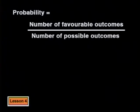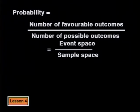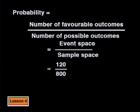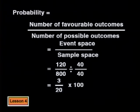Now let's calculate a probability using the Venn diagram. Suppose the school allows learners to do both music and art. What's the probability that the first learner I talk to does both art and music? We use the probability ratio: the number of favorable outcomes out of the total number of possible outcomes — in Venn diagram terms, that's the event space out of the sample space. The event space, those doing both art and music, is 120. The sample space is 800. 40 goes into 120 three times, and 40 goes into 800 twenty times. So 3 out of every 20 learners do both art and music — as a percentage, that's 15%. There's a 15% chance that the first person I meet does both art and music.